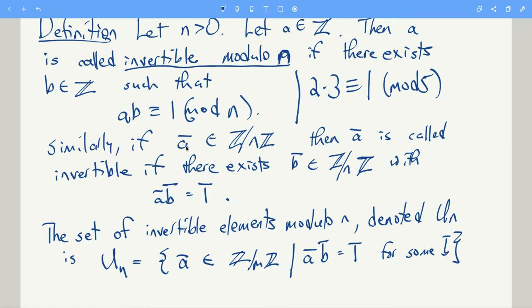And then if we have a congruence class a bar, then we'll say that a bar is invertible if there is a congruence class b bar, such that if you multiply the congruence class, you get the congruence class of 1.